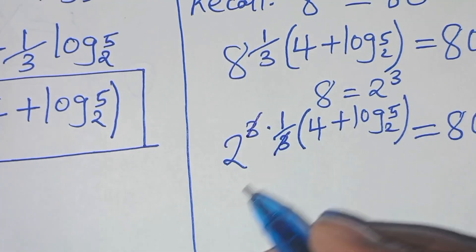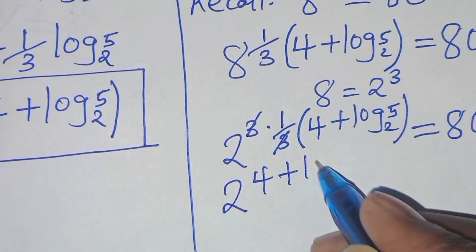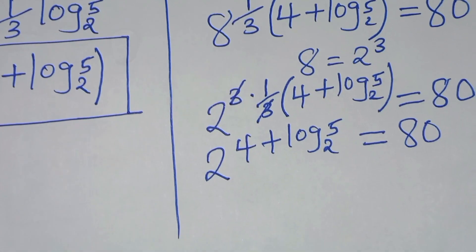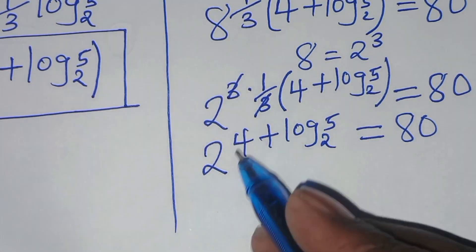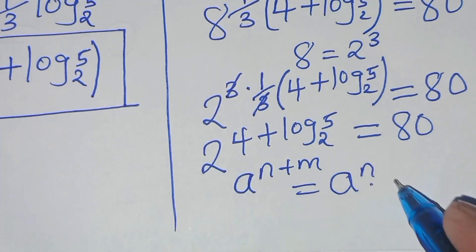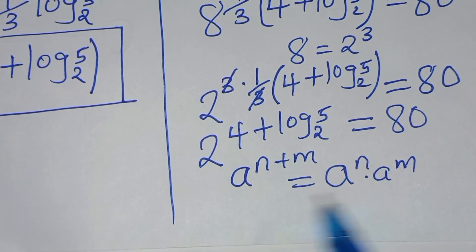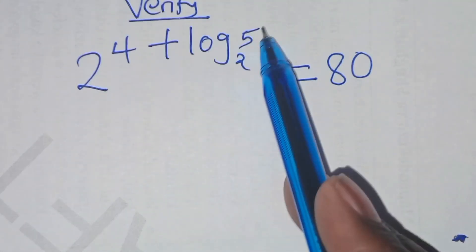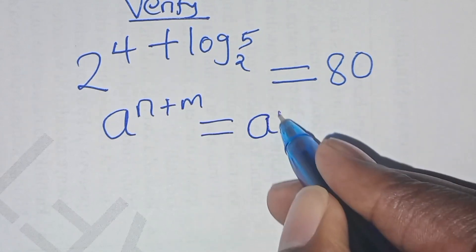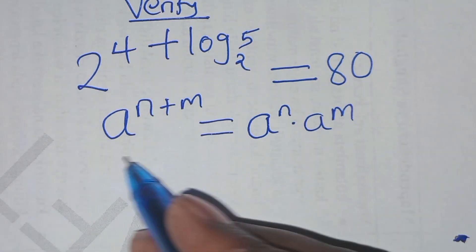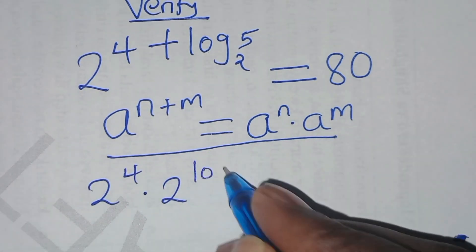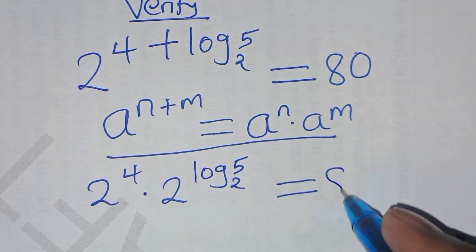Simplifying, this is 2 to the power (4 plus log 5 to base 2), which should give a value of 80. This expression is in the form of a to the power (n plus m), which we can transform as a to the power n times a to the power m. Applying this exponent property, we have 2 to the power 4 times 2 to the power log 5 to base 2, which should equal 80.